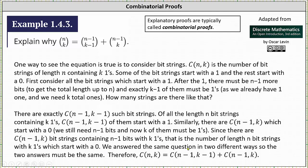We answer the same question in two different ways, so the two answers must be the same. Therefore, N choose K is equal to N minus one choose K minus one plus N minus one choose K.